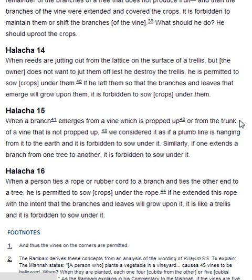Halakha 15. When a branch emerges from a vine which is propped up, or from the trunk of a vine that is not propped up, we consider it as if a plum line is hanging from it to the earth, and it is forbidden to sow under it. Similarly, if one extends a branch from one tree to another, it is forbidden to sow under it. Halakha 16. When a person ties a rope or rubber cord to a branch and ties the other end to a tree, he is permitted to sow crops under the rope. If he extended this rope with the intent that the branches and leaves will grow upon it, it is like a trellis and it is forbidden to sow under it.